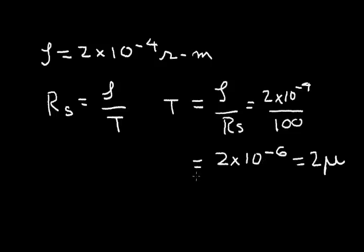So if I have a material with a resistivity of 2 times 10 to the minus 4 ohm-meters and this material is 2 microns thick, I have a sheet resistance of 100 ohms per square. Now let's use this 2-micron-thick material to make a 200 ohm resistor. I can lay down one square — that's equal to 100 ohms — then add another square, and now I have a 200 ohm resistor.